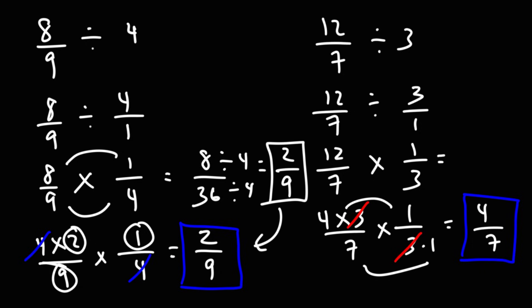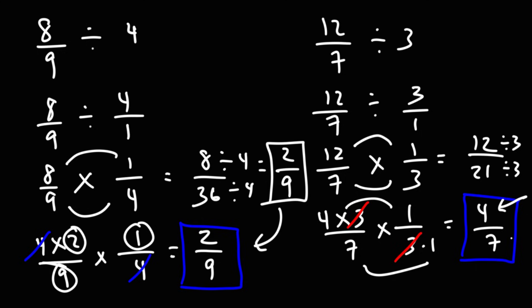The same is true for the last example. If we multiply across we'll have 12, and 7 times 3 is 21. Now to reduce the fraction, we need to divide the top and bottom by 3: 12 divided by 3 gives us 4, and 21 divided by 3 gives us 7. But canceling out this way just makes it a lot easier, and both ways will give you the same answer.